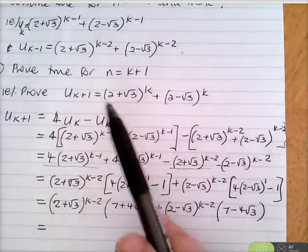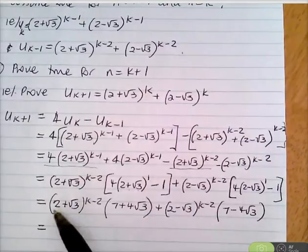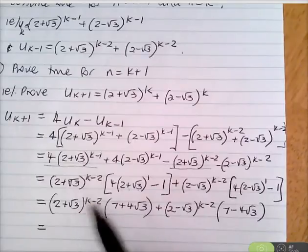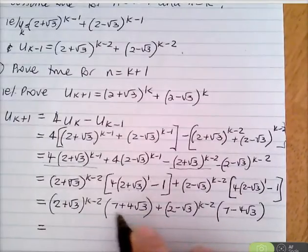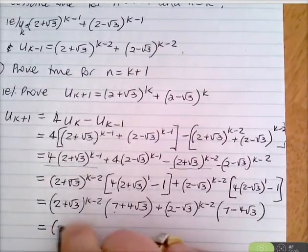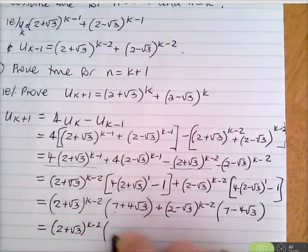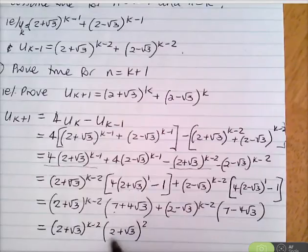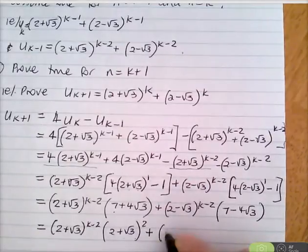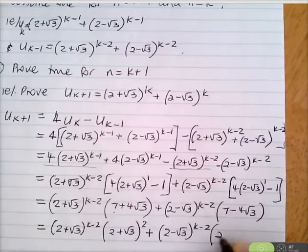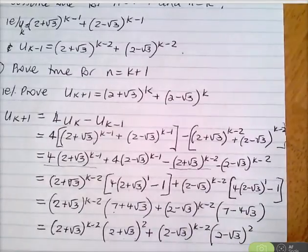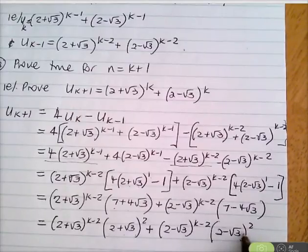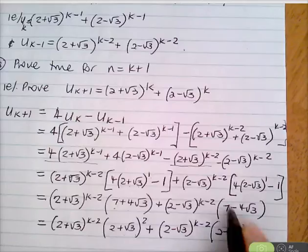We need to get (2+√3)^k and (2−√3)^k. Notice that (2+√3)² = 4 + 4√3 + 3 = 7 + 4√3, and (2−√3)² = 4 − 4√3 + 3 = 7 − 4√3. So both bracket expressions are perfect squares.